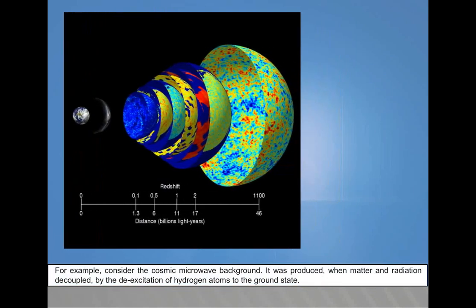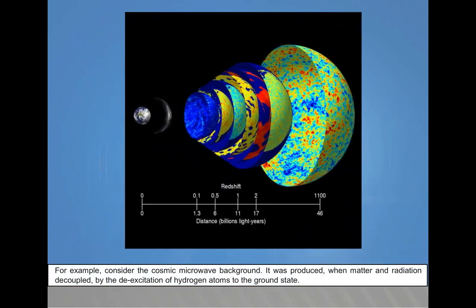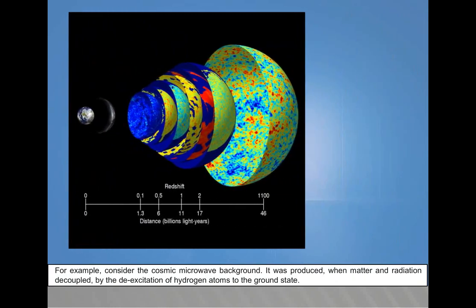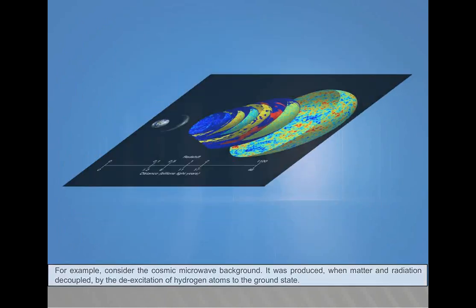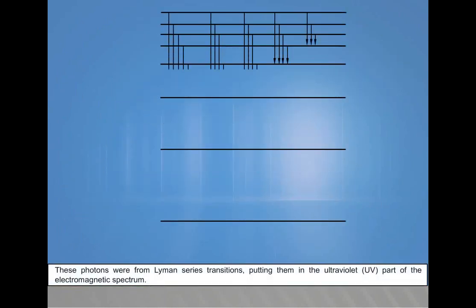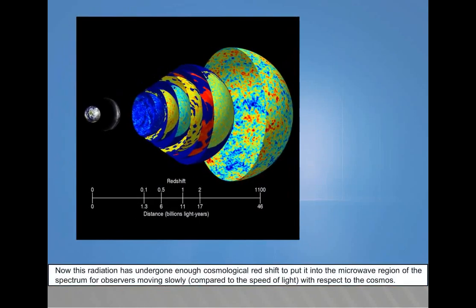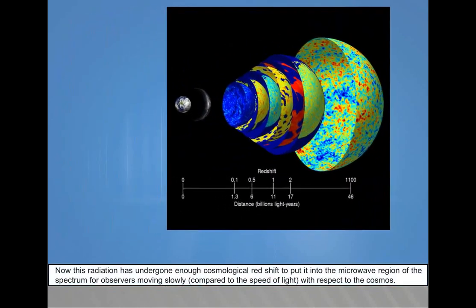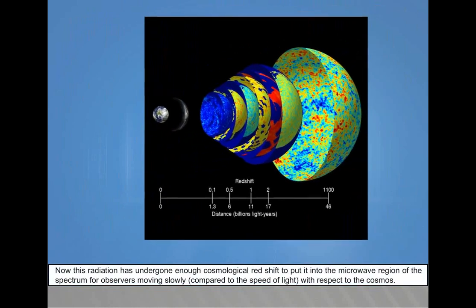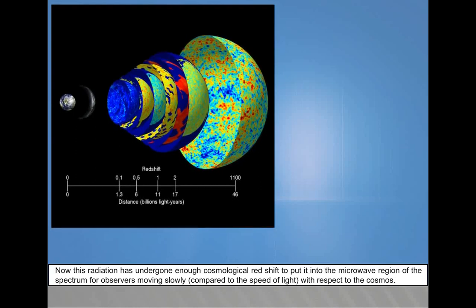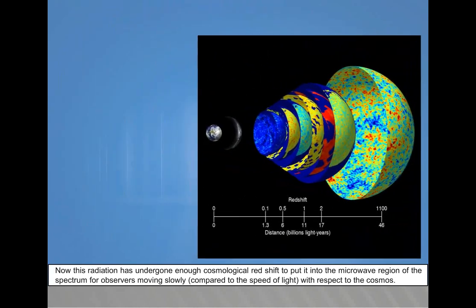For example, consider the cosmic microwave background. It was produced when matter and radiation decoupled by the de-excitation of hydrogen atoms to the ground state. These photons were from Lyman series transitions, putting them in the ultraviolet part of the electromagnetic spectrum. Now, this radiation has undergone enough cosmological redshift to put it into the microwave region of the spectrum for observers moving slowly compared to the speed of light with respect to the cosmos.